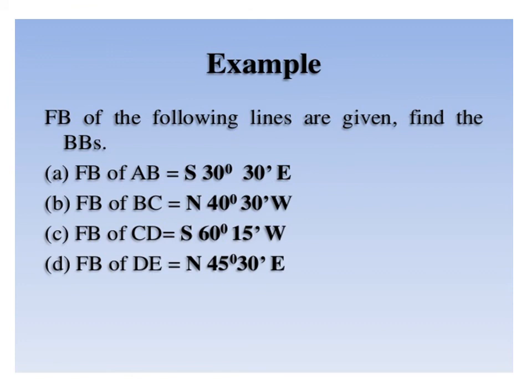This slide refers to forward bearing of a line and calculating the back bearing in the quadrantal bearing system. When calculating back bearing, replace south with north and east with west. For example, the forward bearing of AB equals S 30 degrees 30 minutes east, so the back bearing of AB equals N 30 degrees 30 minutes west. Similarly, for line BC, if the forward bearing is S 40 degrees 30 minutes east, we apply the same replacement.